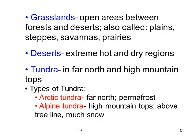Alpine tundras are more of what we see here — mountaintops, tree lines, or above tree lines that tend to have more snow. Mount Washington, for example, can be considered an alpine tundra. Why do trees start getting shorter and shorter as we get higher and higher on a mountain?